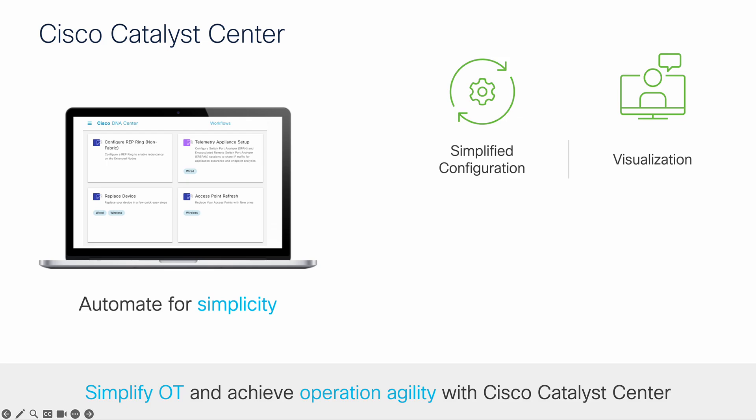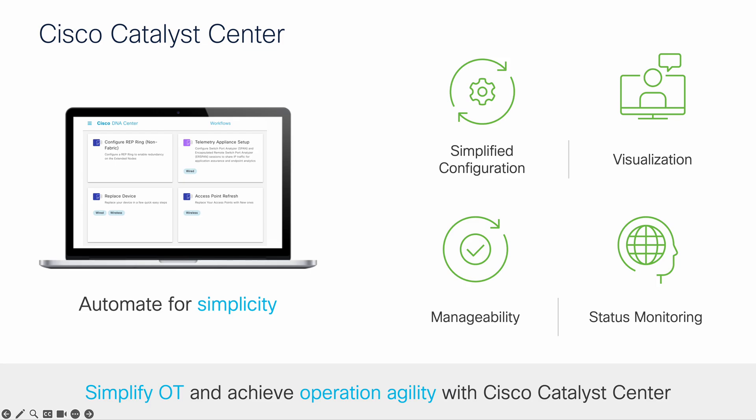In terms of visualization, Catalyst Center visualizes the topology of the network, including WRAP rings, which can help in planning and troubleshooting. For manageability, with Catalyst Center, we can manage all network devices from a single pane of glass, making it easier to monitor and maintain the network. And for status monitoring, Catalyst Center allows you to view the status of the devices in a WRAP ring, including the different states of the links, which is essential for ongoing operations and quick recovery from issues.